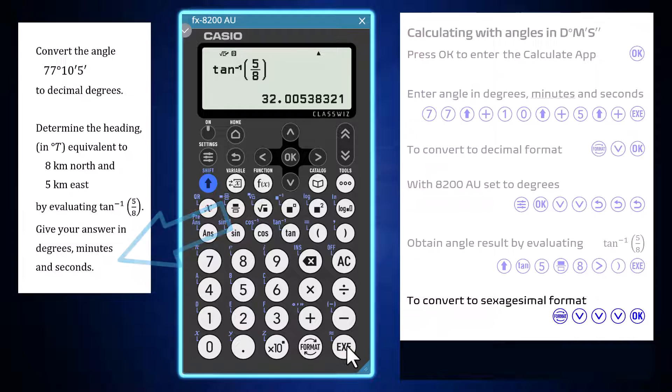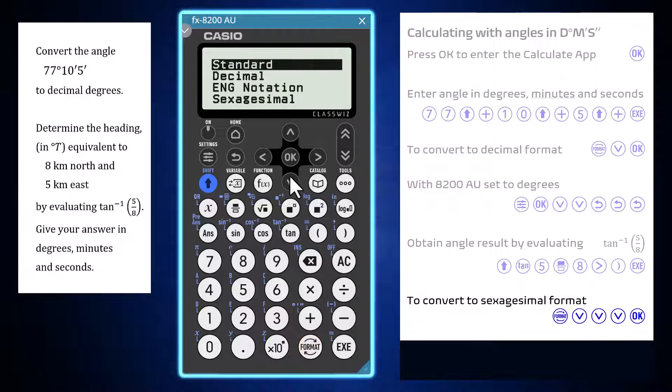This output can be converted to degrees, minutes and seconds by using the format key and arrowing down to select sexagesimal.